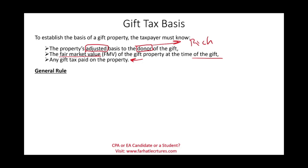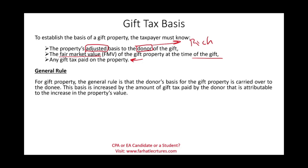Let's look at the general rule first. For gift property, the general rule is that the donor's adjusted basis is carried over to the donee — whatever their basis was, it transfers to you. That's the general rule. Additionally, you would increase that basis by the amount of gift tax paid by the donor that is attributable to the increase in the property's value. So if the property increased in value and the donor paid tax on that increase, your basis will be increased by a proportionate amount.